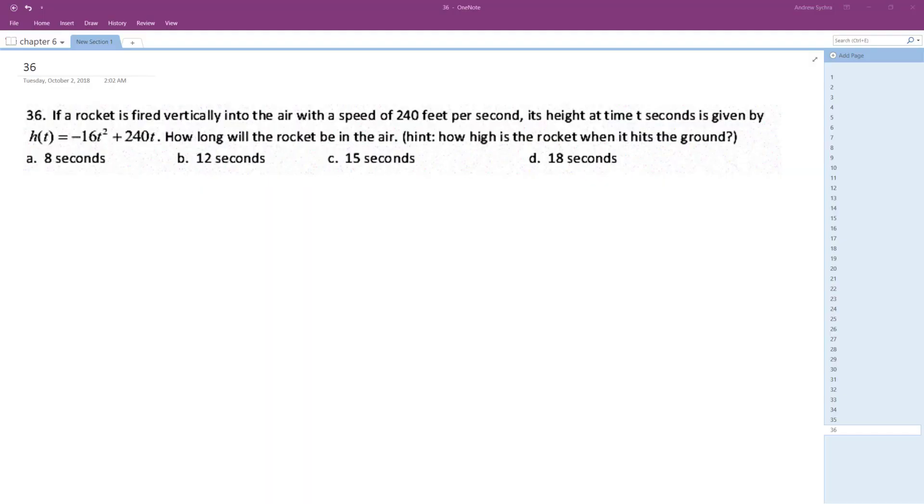For rockets fired vertically into the air at a speed of 240 feet per second, if its height at time t seconds is given by that equation,